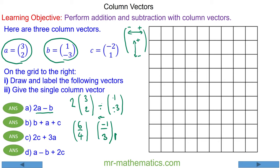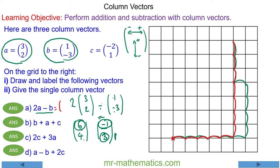So we're going to move a point 6 to the right, then 4 up, and then we're going to move it 1 to the left and 3 up. So the resultant vector from the start is 5 to the right and 7 up.